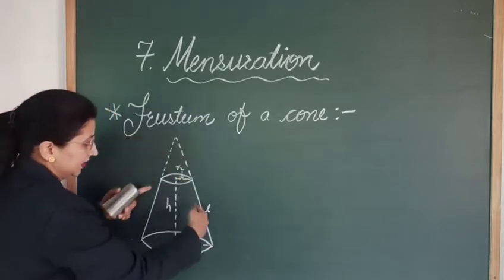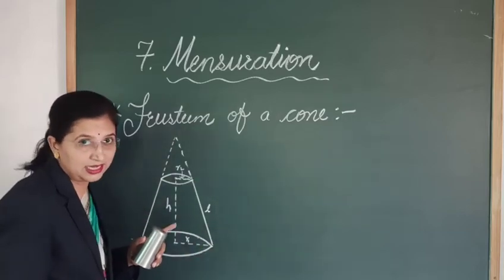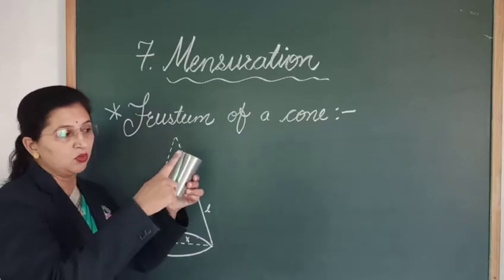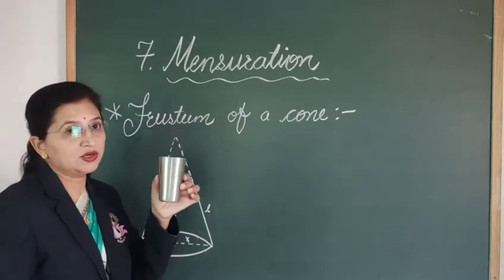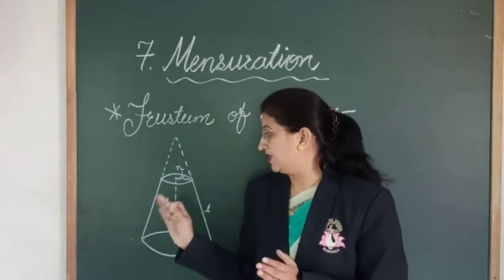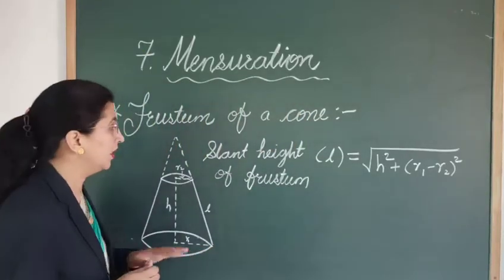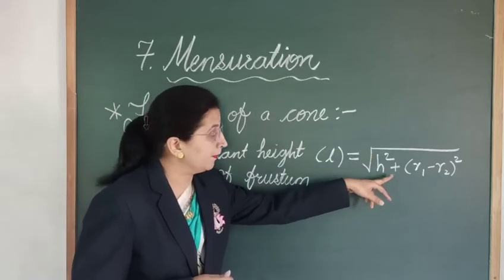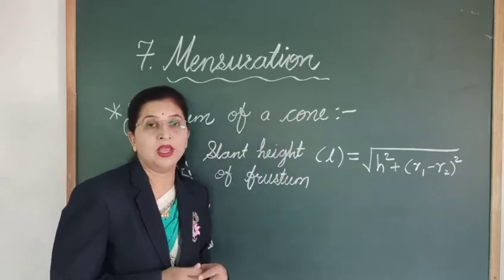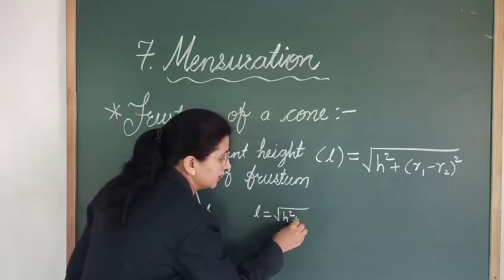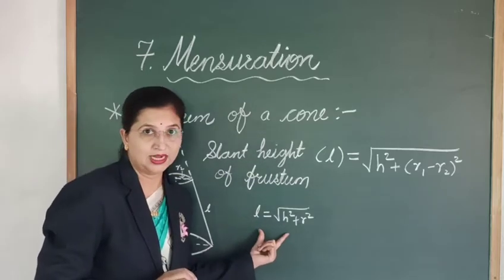And similar to the cone, we also have the slant height for the frustum. This length along the curved surface is the slant height of the frustum. Now let's learn the different formulae related to the frustum of a cone. The formula to find the slant height of the frustum is: L = √(H² + (R1 − R2)²). In the case of a cone, we have L = √(H² + R²). The formula is the same, except instead of R² we use (R1 − R2)², because the frustum has two radii.